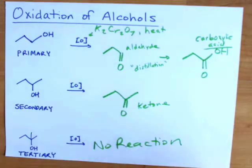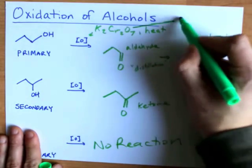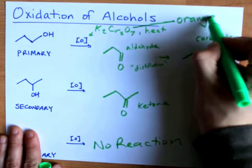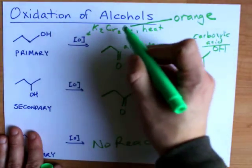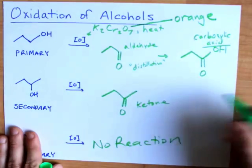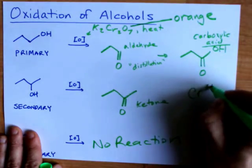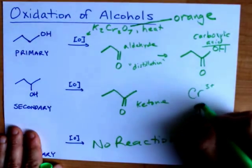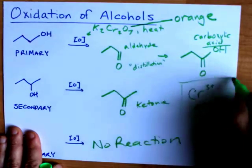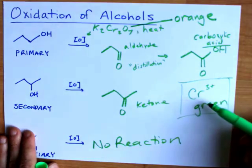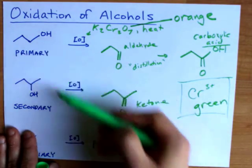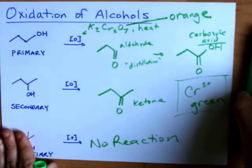The last thing I want to point out is that this dichromate solution originally starts as orange and as the reaction progresses the Cr2O7 2- ions become Cr3+ ions which are green. So you can physically watch the reaction change color from orange to green if primary or secondary alcohols are being oxidized.